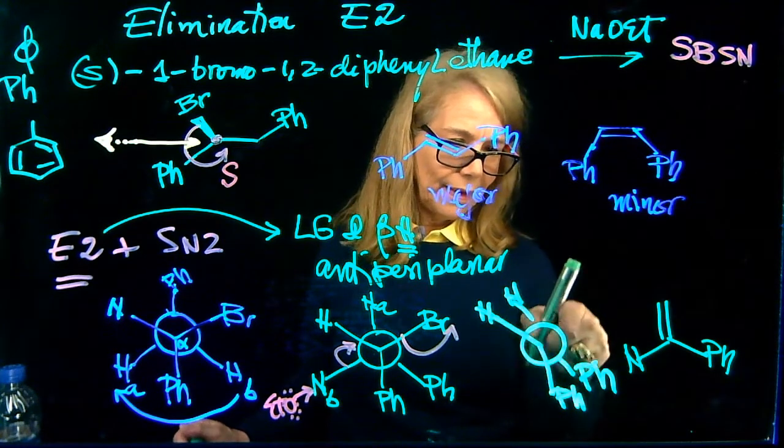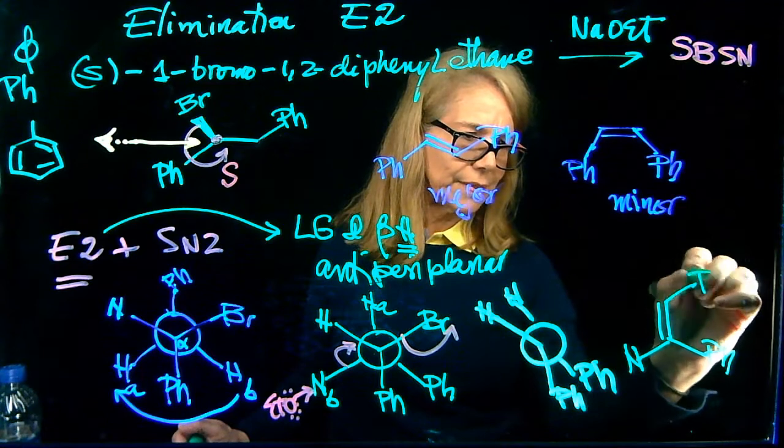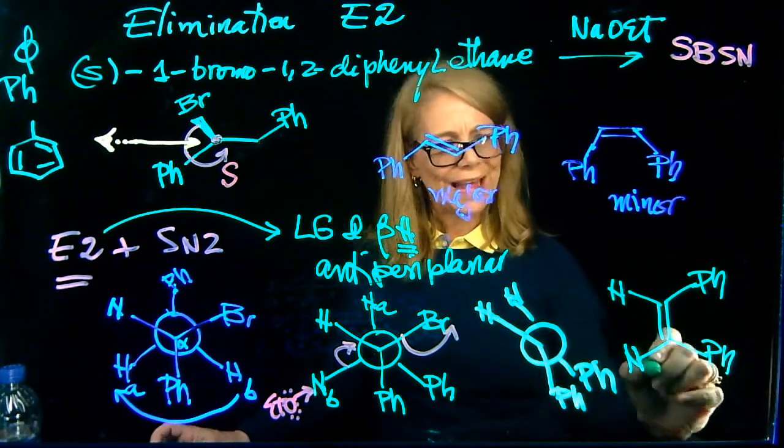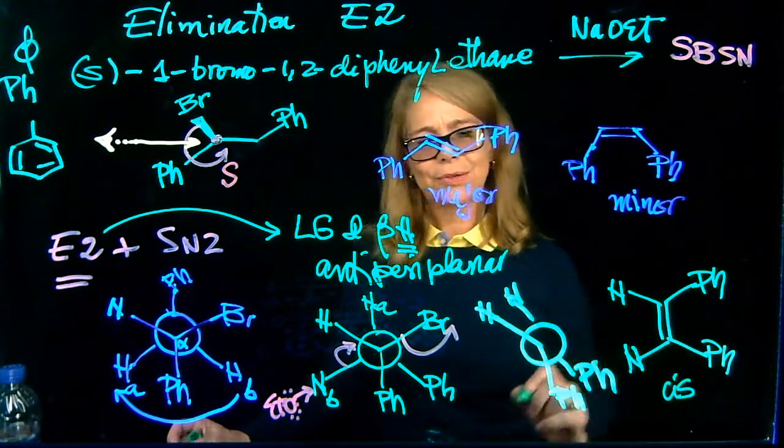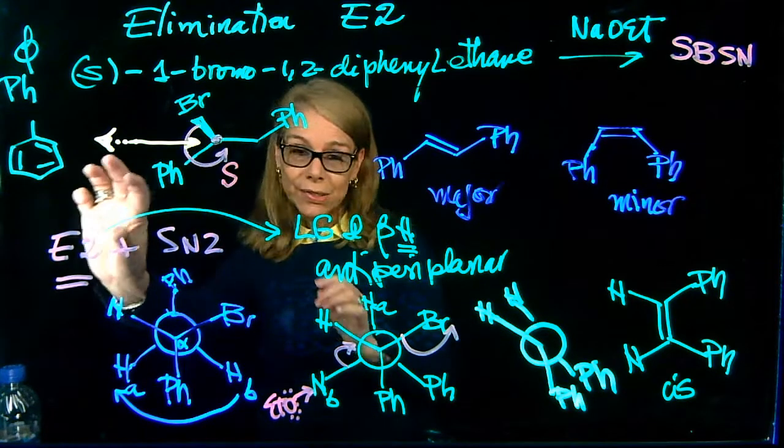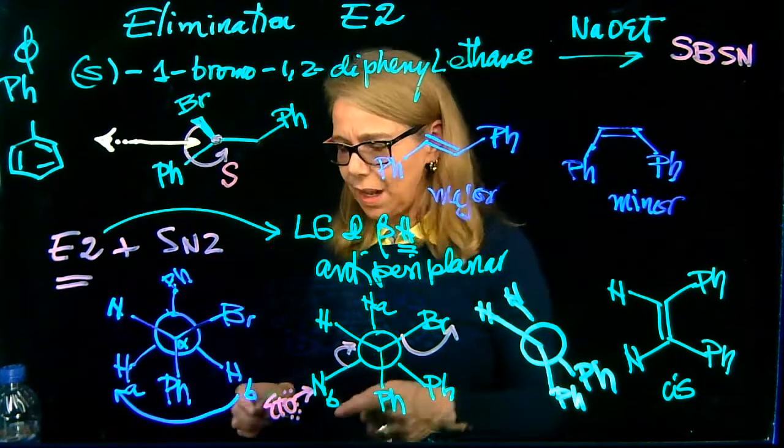Carbon in the front has a phenyl and a hydrogen. And the carbon in the back, I have a phenyl here. See here to the same side of that. And a hydrogen. So that is the cis isomer. And we see this is not the major product in the E2 because notice